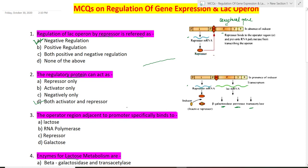Next question: the operator region adjacent to the promoter specifically binds to what? Here we can clearly see the operator region, which is adjacent to the promoter region for the structural genes. The repressor protein binds to this operator region and does not allow RNA polymerase to bind the promoter, so transcription of these genes does not occur. The operator region specifically binds to the repressor protein, so option C is correct.